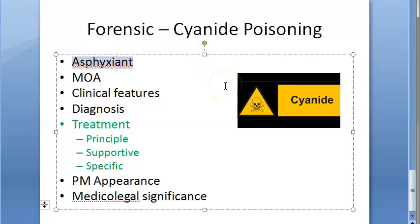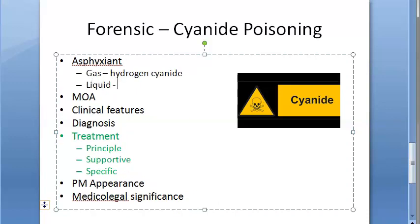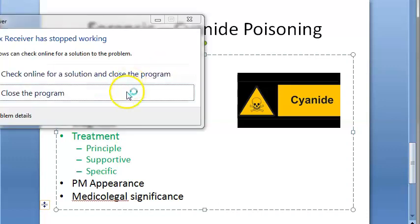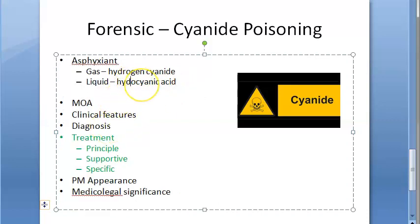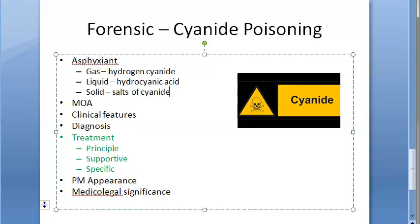Cyanide poisoning results from inhalation of hydrogen cyanide gas, ingestion of hydrocyanic acid in liquid form, or salts of cyanide in solid form. So in gas form it is hydrogen cyanide, liquid form is hydrocyanic acid, and solid form is salts of cyanide.